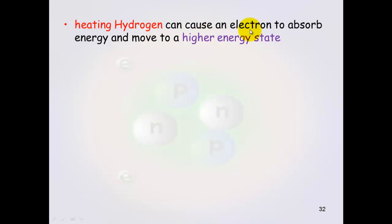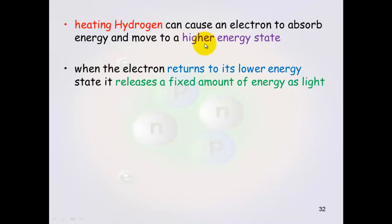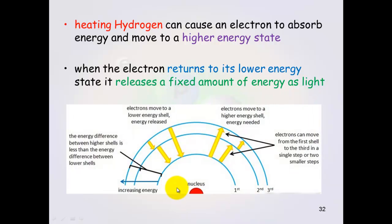Heating hydrogen can cause an electron to absorb energy and move to higher energy state. And when that electron returns to its lower energy state it releases a fixed amount of energy as light. This is what this means here. So we have the nucleus and we have the electrons sitting in their shells. Now if you heat up or give energy to one of these electrons it can jump up a shell. If you give it more energy it can jump up two shells or three shells depending on how much energy you give it. What then happens is when that electron cools down it will move back to its original shell but it will release energy and the way that it releases energy is as light.